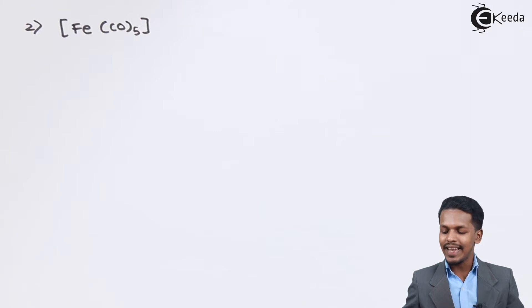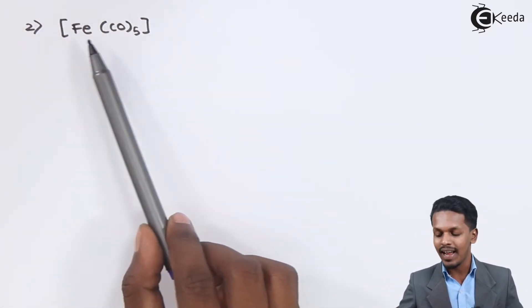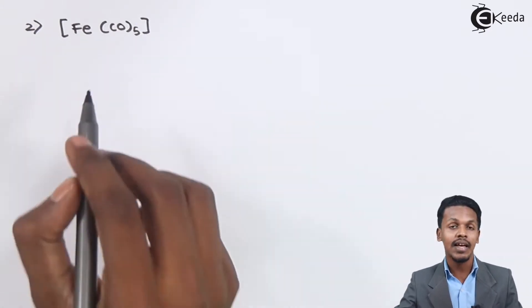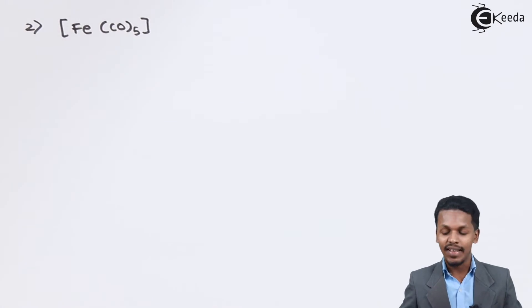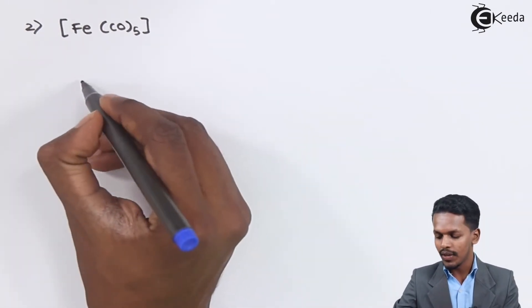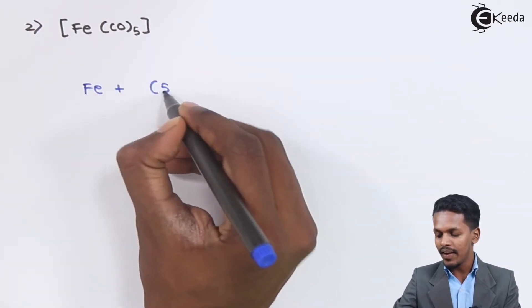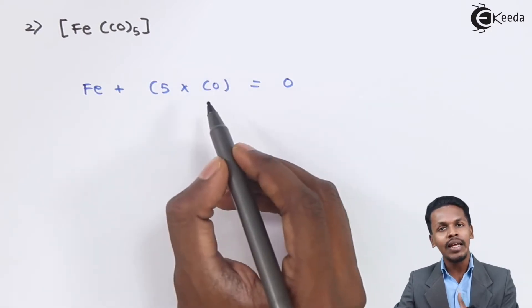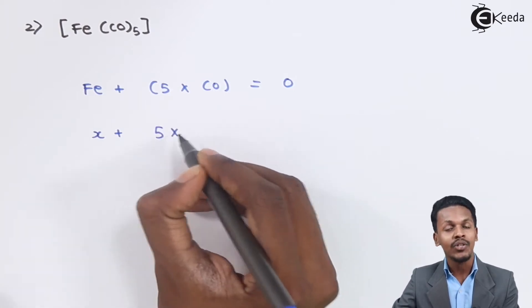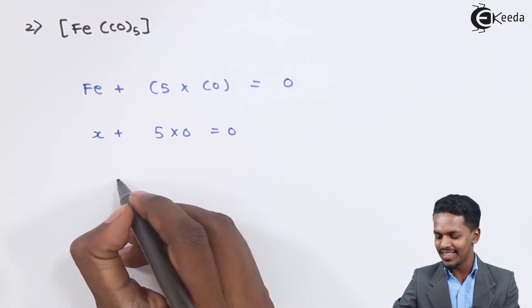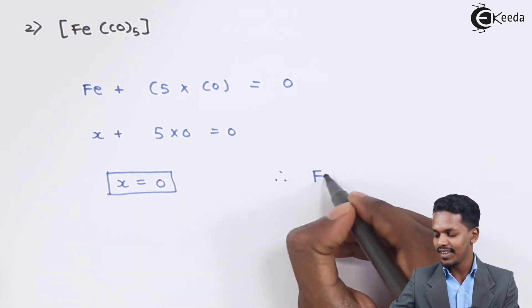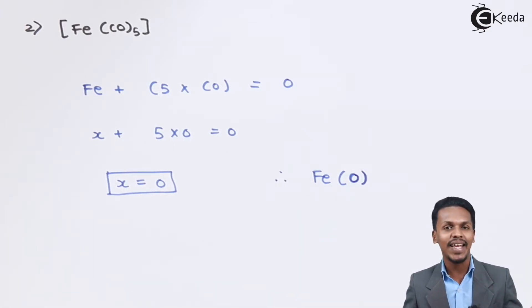The next complex is Fe(CO)₅ — pentacarbonyl iron. In this case, there are no primary entities, so this complex will not get ionized. The complex contains Fe plus five carbonyl groups and the overall charge is zero. Carbonyl is a neutral ligand, so its charge is zero; five times zero equals zero. Therefore, the oxidation number of iron in Fe(CO)₅ is zero, written as Fe(0).